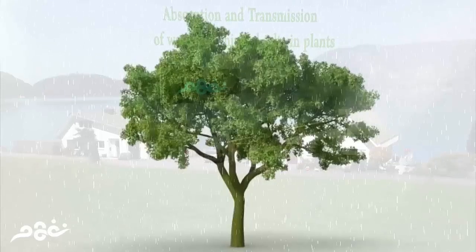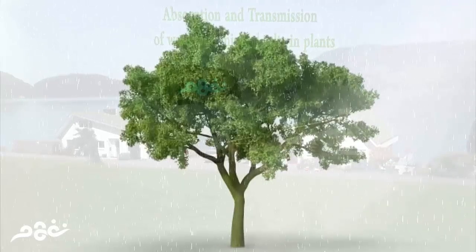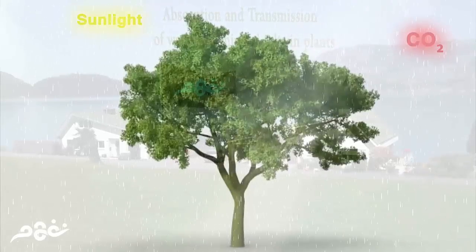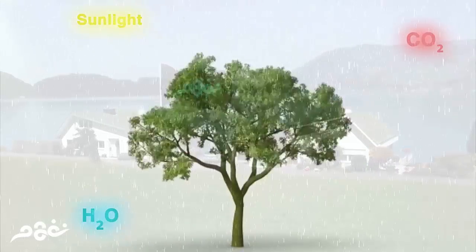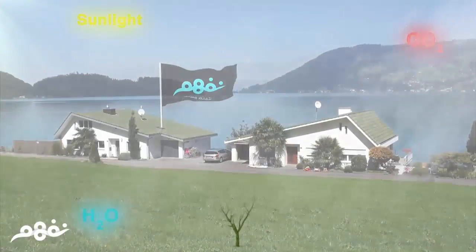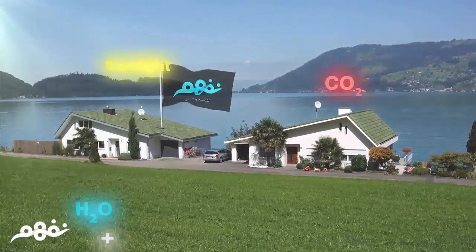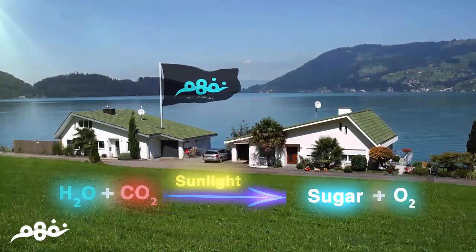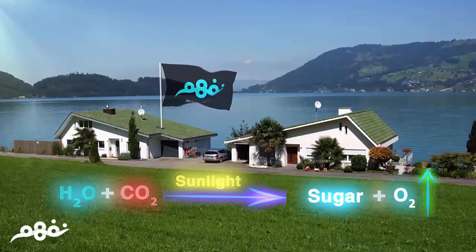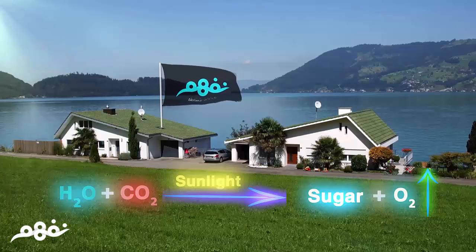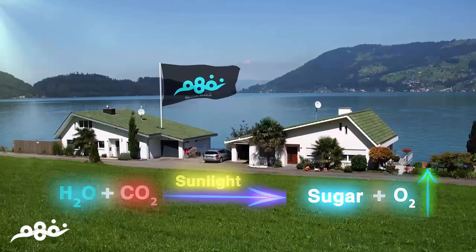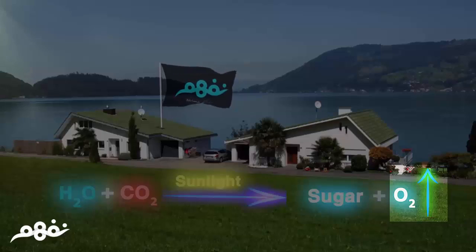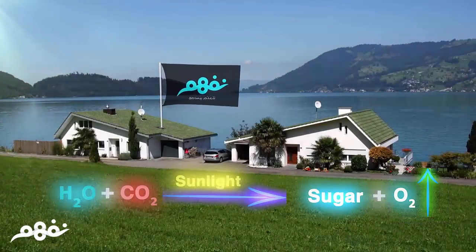We all know that there are very important factors needed for a plant to grow normally: carbon dioxide (CO2), sunlight, and water (H2O). The plant uses these components to perform the famous process of photosynthesis, through which it converts simple raw materials into complicated forms like starch and other carbohydrates — the essential food for humans and animals.